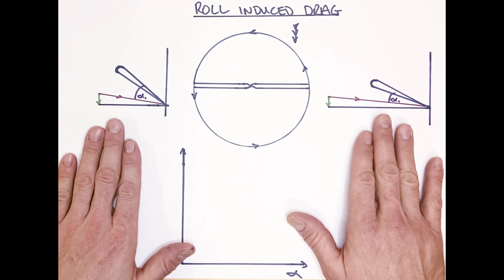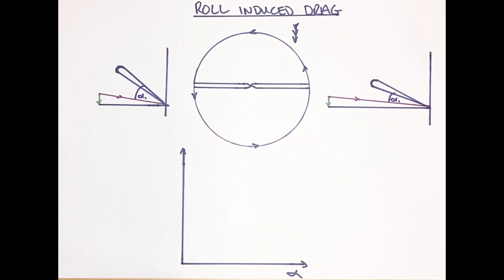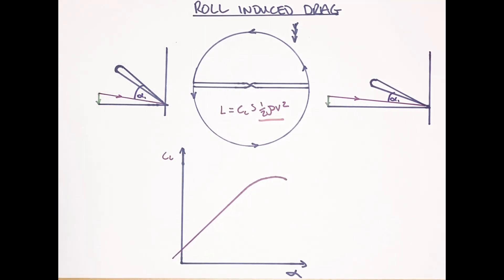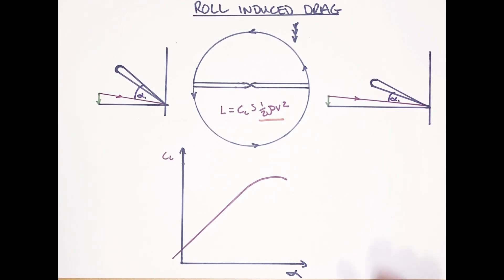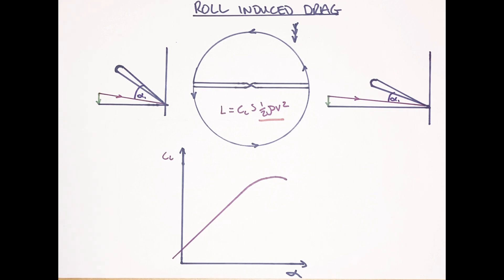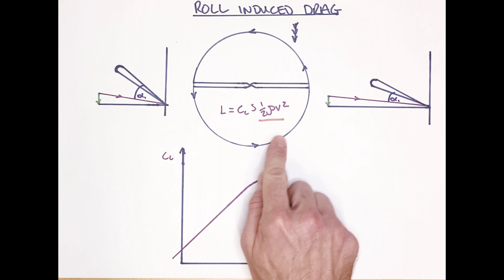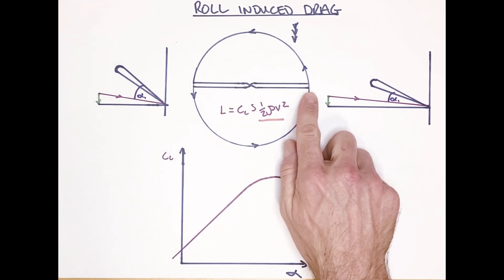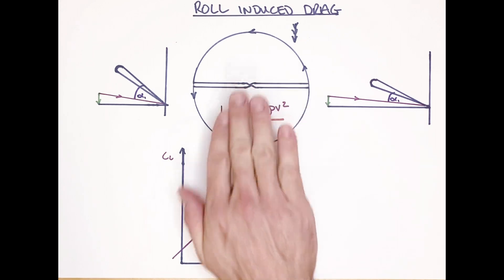We're going to focus on a left roll — towards the retreating side. We've initiated the roll by increasing angle of attack on the advancing side by increasing pitch, and reducing it on the retreating side. This initiates the blade raising up on the advancing side, creating more lift there and tilting the whole disc to the left. Now we need to look at our start point in relation to the drag curve, which we'll overlay on the lift curve chart.